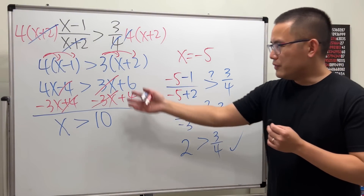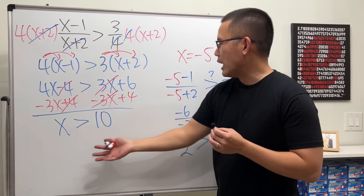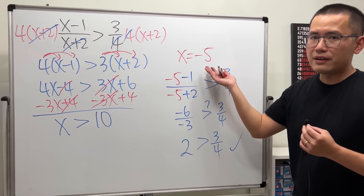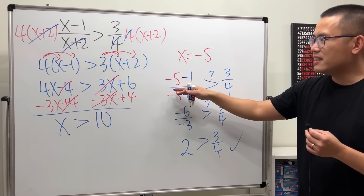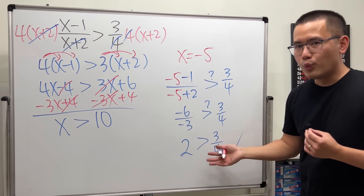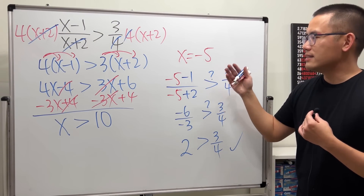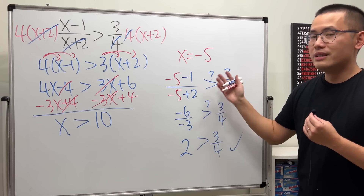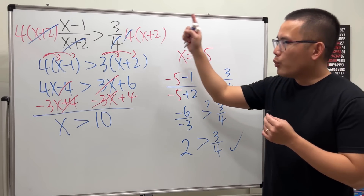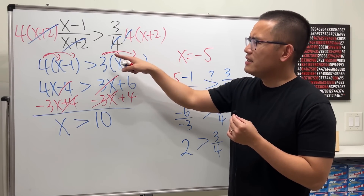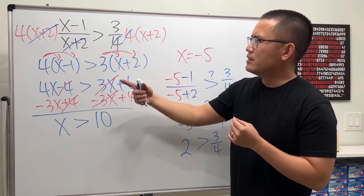But you see, if you just followed the earlier method, what happened to negative 5? In fact, negative 6 and even negative 100 will also work. So what exactly went wrong?